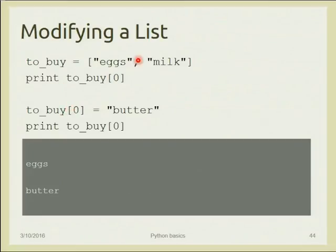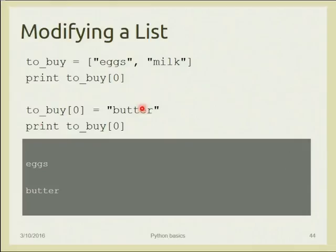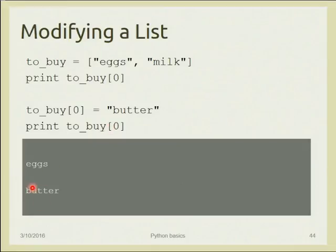For example, if your list is 'to_buy = ["eggs", "milk"]' and you want to replace 'eggs' with 'butter', you can write 'to_buy[0] = "butter"'. Then printing 'to_buy[0]' gives 'butter', and the full list becomes 'butter, milk'.